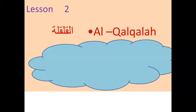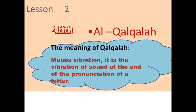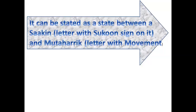In this video we will learn the meaning of Qalqala, the letters of Qalqala, the examples, and the types of Qalqala. First, we will recognize the meaning of Qalqala. Qalqala means vibration — it is the vibration of sound at the end of the pronunciation of a letter. It can be stated as a state between a letter with a sukoon sign and the mutaharrik letter with movement.